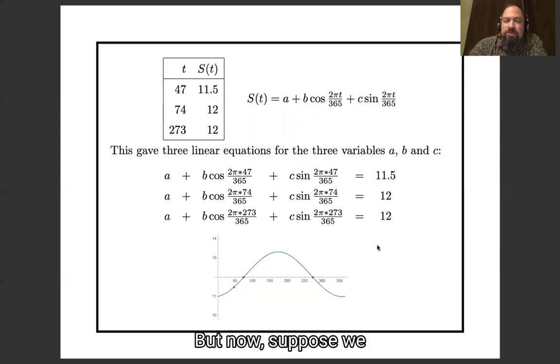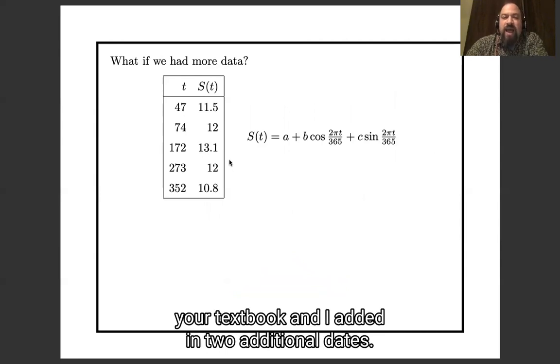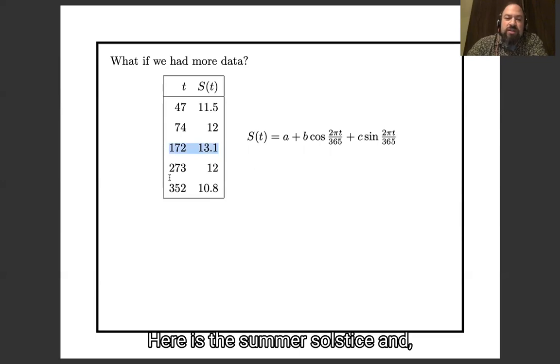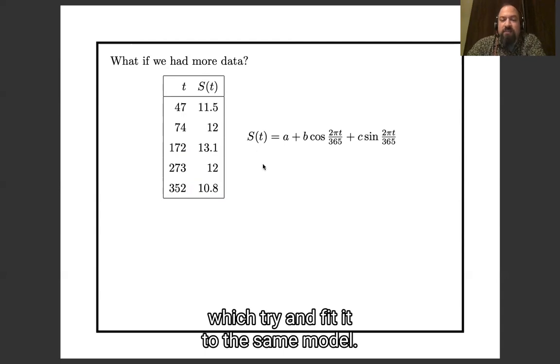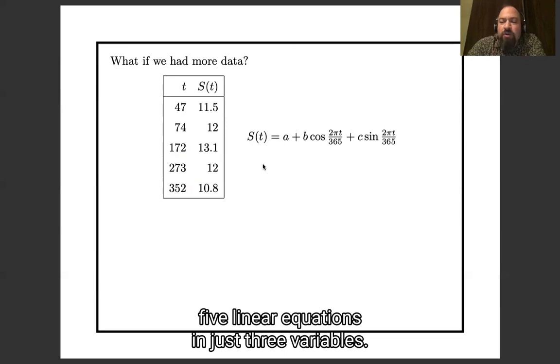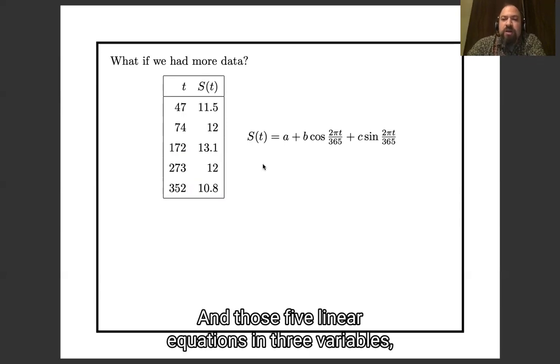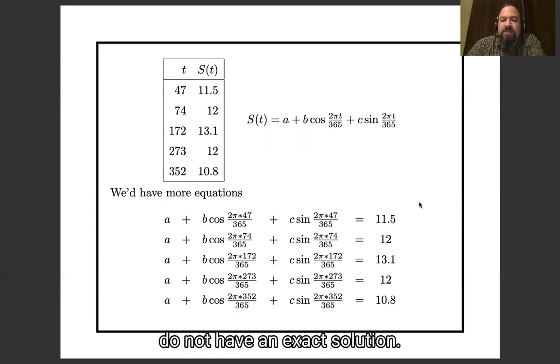But now, suppose we include a few more days of the calendar. So I took the data from your textbook and I added in two additional dates. Here's the summer solstice and here's the winter solstice. On the longest day of the year, Mumbai gets 13.1 hours of sunlight, and on the shortest day gets 10.8 hours of sunlight. Let's try to fit it to the same model. So this time we're going to have five linear equations in just three variables.